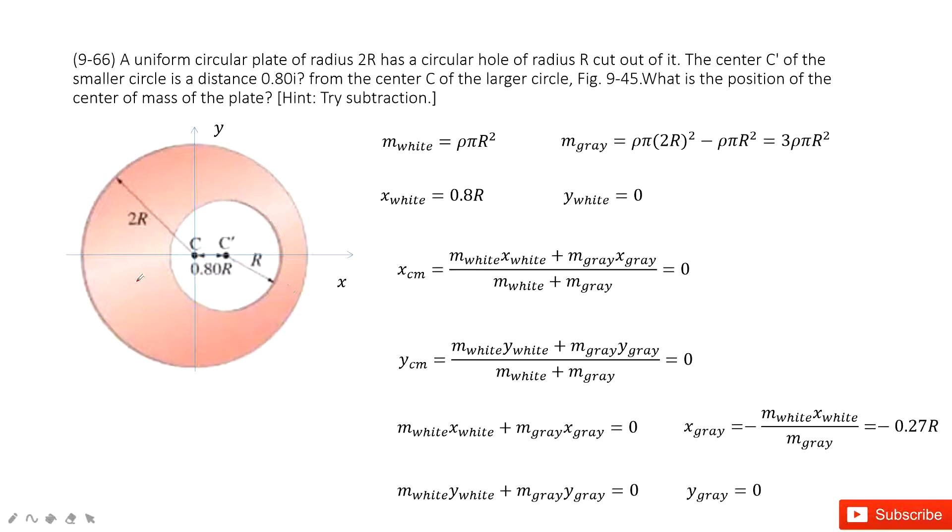We can consider first thing we have the uniform distributed circle. The origin is at the center, and then the radius is 2R, and then subtract another circle.